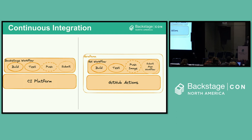At Grafana we use GitHub Actions as our CI system and have an associated GitHub workflow for Backstage. A simple step submits an Argo Workflow — a workflow orchestrator tool — to start the deployment process for the newly minted tagged image.